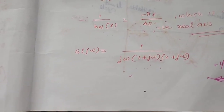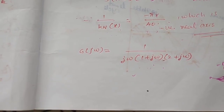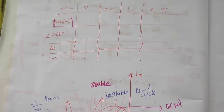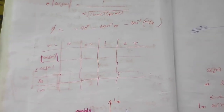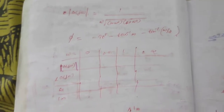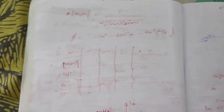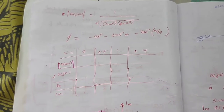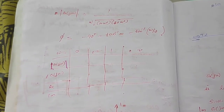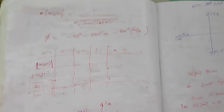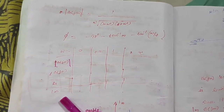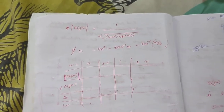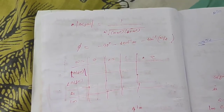Now substitute s = jω for the linear part: G(jω) = 1 divided by jω times (1 + jω) times (2 + jω). We can approach this problem with two different methods. The first method is to find the magnitude of G(jω) and the phase angle φ, then extract real and imaginary parts and draw the plot of G(jω).